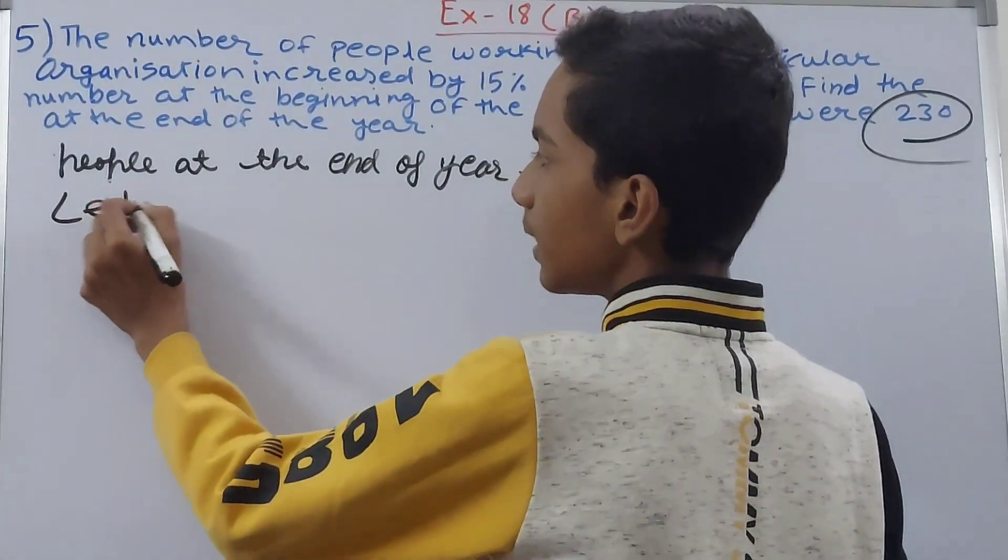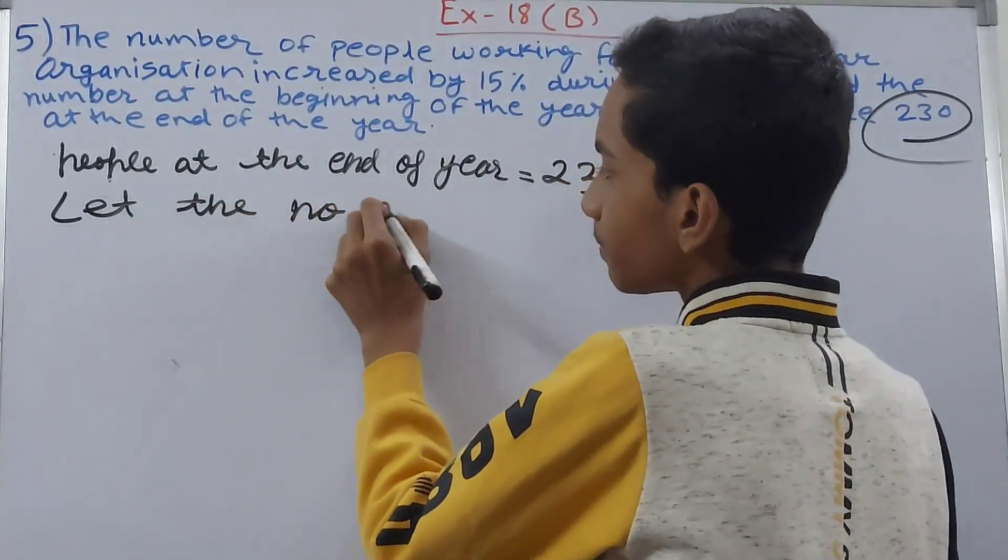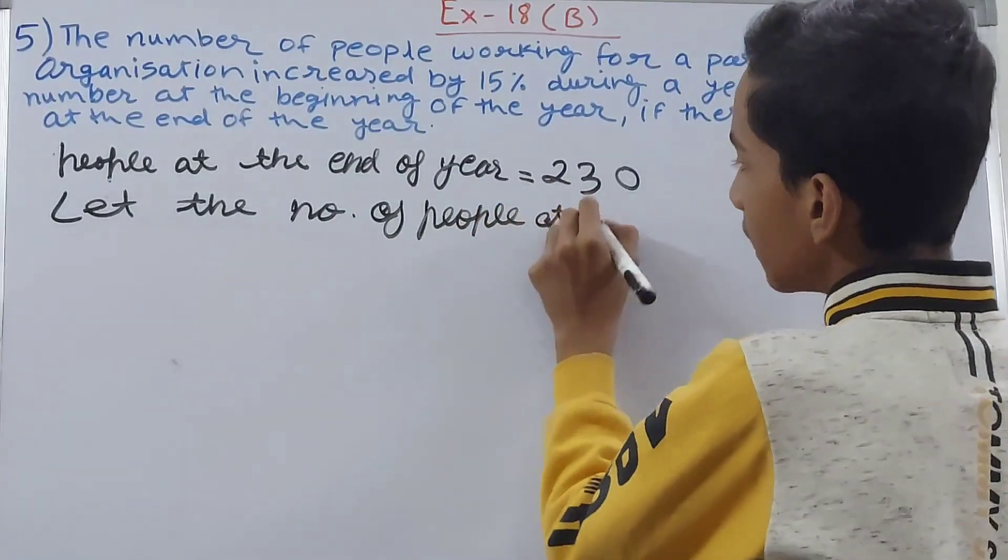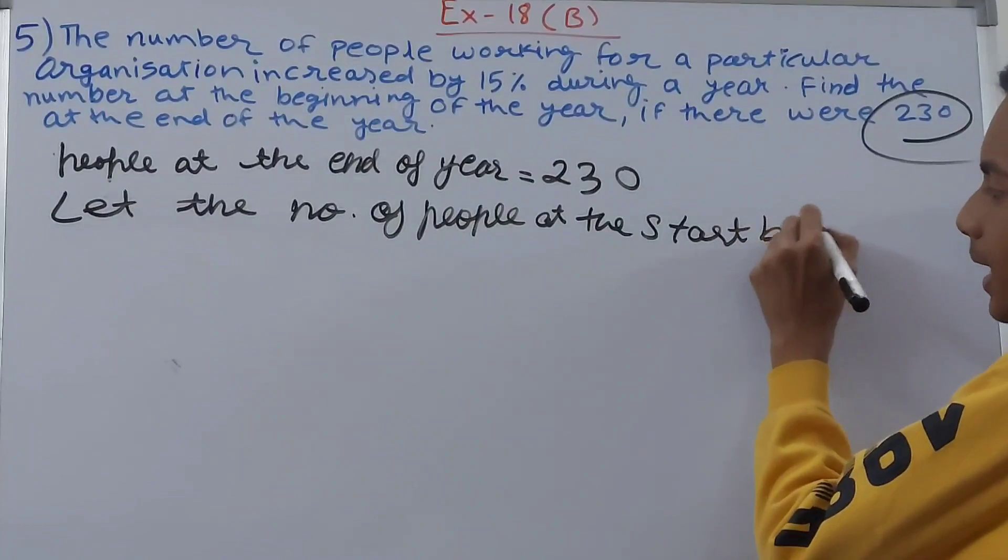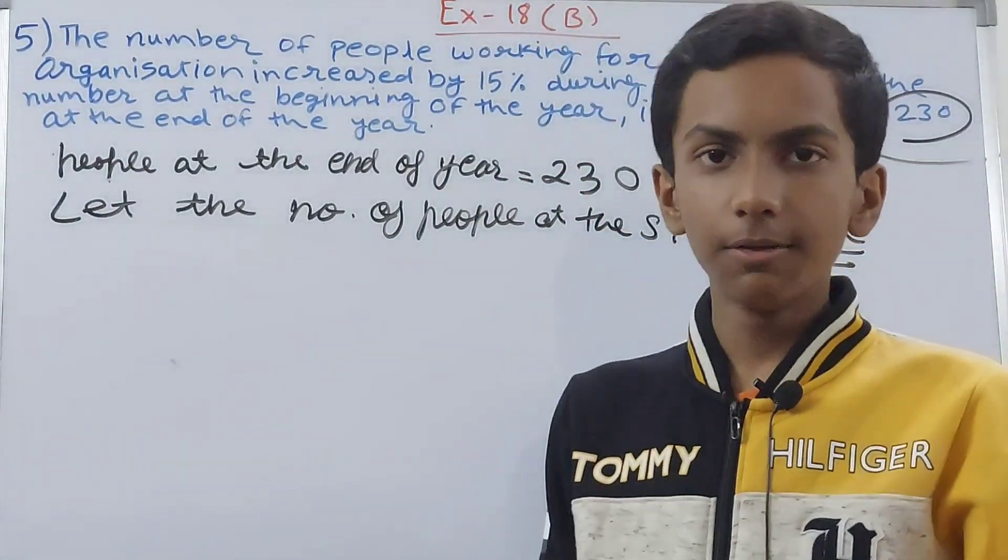First of all we will assume here that let the number of people at the start be x. So there were x number of people at the starting of the year. Now in this x, 15 percent was increased.